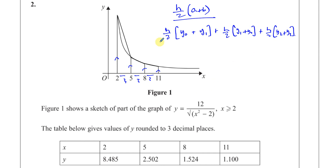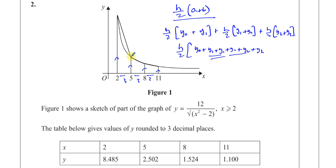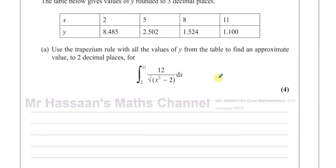That covers the whole area. Notice that h over 2 is a common factor. Inside, we have y0 plus y1 plus another y1 plus y2 plus another y2 plus y3. So y1 and y2 each appear twice — y1 is shared by the first and second trapeziums, and y2 is shared by the second and third. The distance between the parallel sides is 3, so it's 3 divided by 2 — that's your h over 2 — times the sum of the parallel sides.